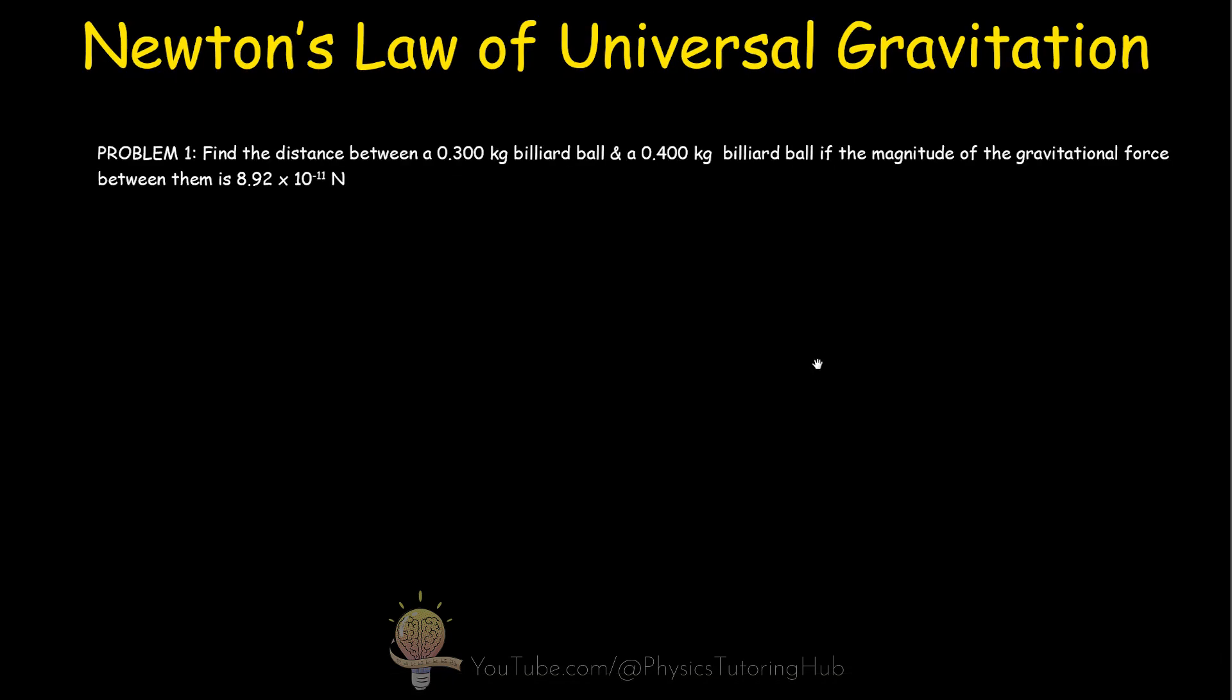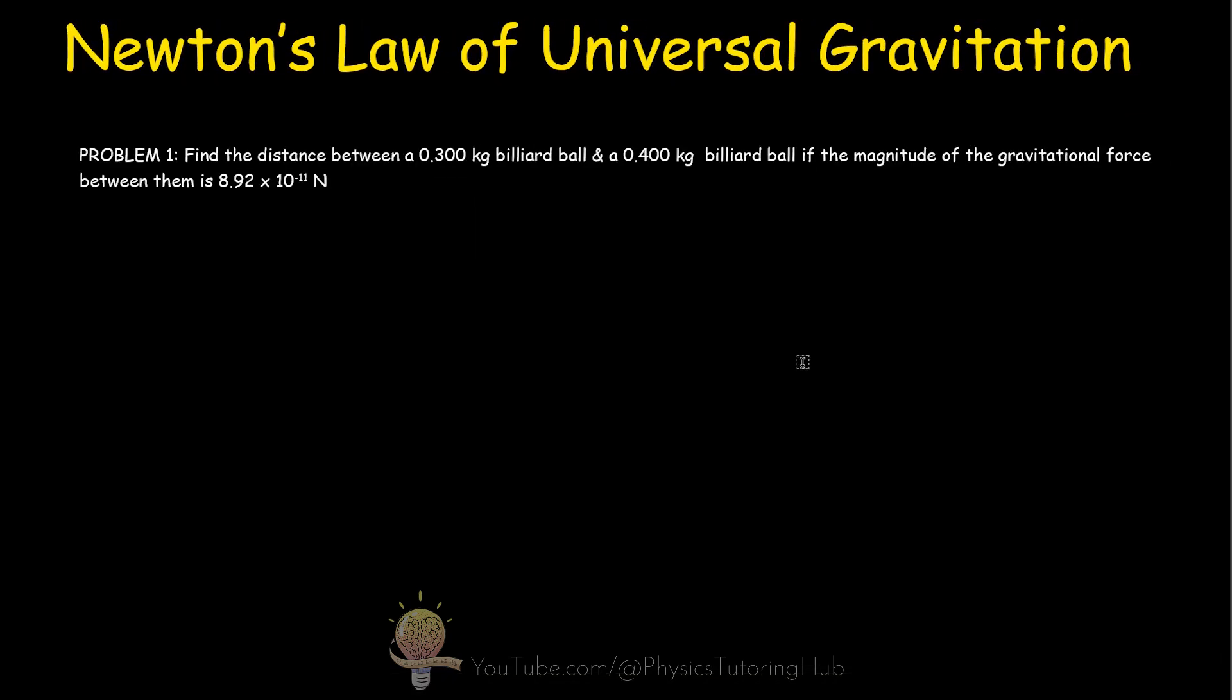So today we're going to cover Newton's law of universal gravitation and we're going to go over two example problems. The first problem: find the distance between a 0.3 kilogram billiard ball and a 0.4 kilogram billiard ball if the magnitude of the gravitational force between them is 8.92 times 10 to the minus 11 newtons.